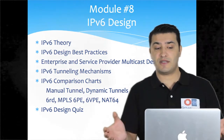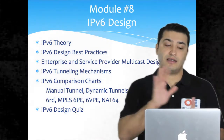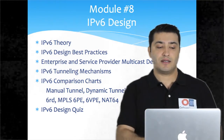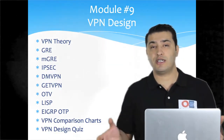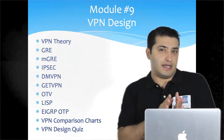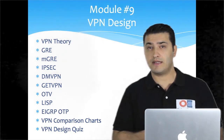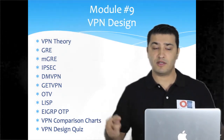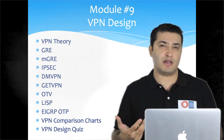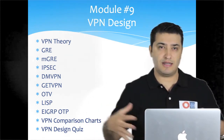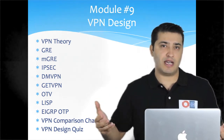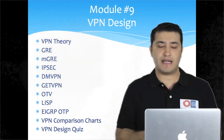Another topic will be IPv6 design, covering IPv6 theory, best practices, and some IPv6 case studies. Next is VPN design: GRE, IPsec, DMVPN, GETVPN, OTV, and LISP. All these overlay tunneling and VPN mechanisms will be explained from a design point of view, and we will compare them — for example, when to use GETVPN versus DMVPN, and the limitations such as not being able to use GETVPN over the internet.